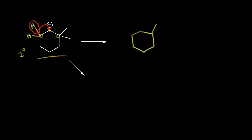Let's draw our ring and put in the two methyl groups coming off of that carbon. The hydrogen in red moves over, and that moved to the top carbon in magenta. There was already a hydrogen bonded to that magenta carbon, so we draw in the original hydrogen. We took a bond away from the carbon in green, and there's still a hydrogen attached to it, but that gives it a plus one formal charge. The carbon in green is directly bonded to two other carbons, so we formed a secondary carbocation — not an improvement.